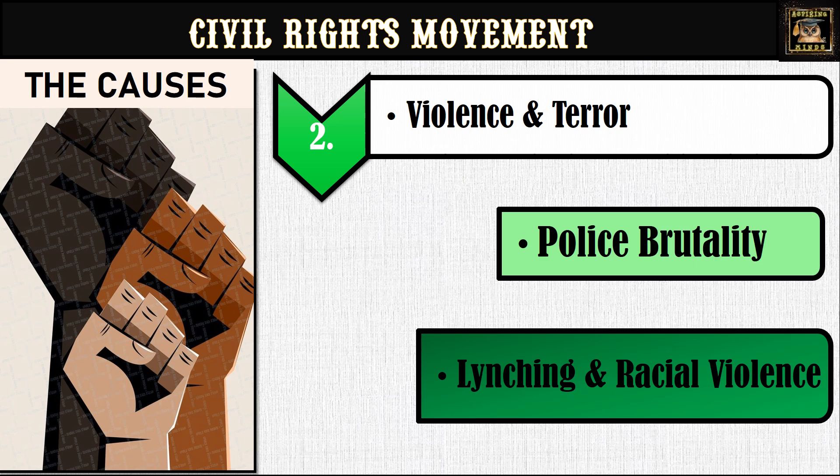When it comes to the second cause — violence and terror — let's talk about lynching. This was not just violence; it was a form of terror designed to keep African Americans in a state of constant fear. These lynchings were often carried out in broad daylight, with large crowds watching as if it were a spectacle. The message was clear: if you step out of line, this could happen to you too. Lynching was a tool of white supremacy used to enforce racial boundaries and remind African Americans of their place in society.